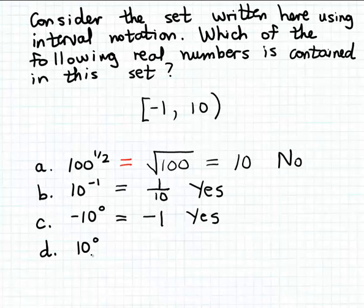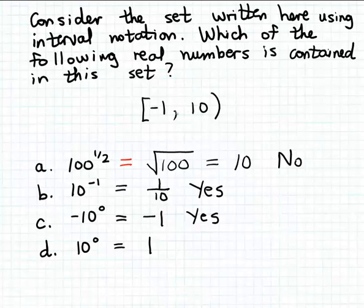Finally, 10 to the 0th power. As we just saw in part C, when you have a base raised to the 0th power — other than 0 — that simplifies to 1. We don't have to worry about a minus sign in this case. So the question is: is 1 contained in this set? And yes, 1 is definitely a number between minus 1 and 10, so it is contained in the interval set.